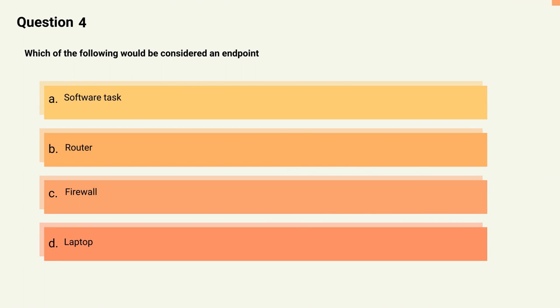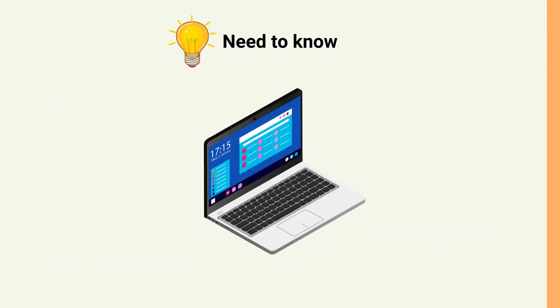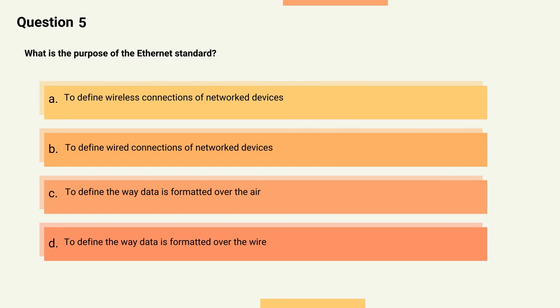The transport layer protocols such as TCP and UDP provide reliable and efficient communication services to the upper layer protocols. Question 4: Which of the following would be considered an endpoint? Options: A) Software task, B) Router, C) Firewall, D) Laptop. The correct answer is Option D, Laptop. Explanation: An endpoint device is a computing device connected to a network with an IP address. Examples include desktop computers, laptops, tablets, smartphones, and IoT devices. Endpoint devices are often targets of cyber attacks.